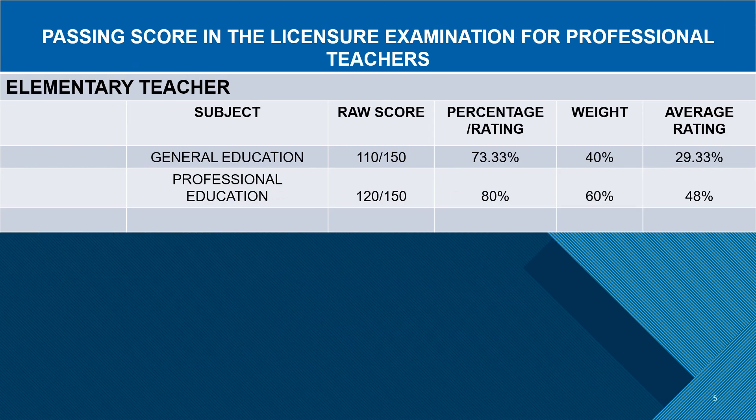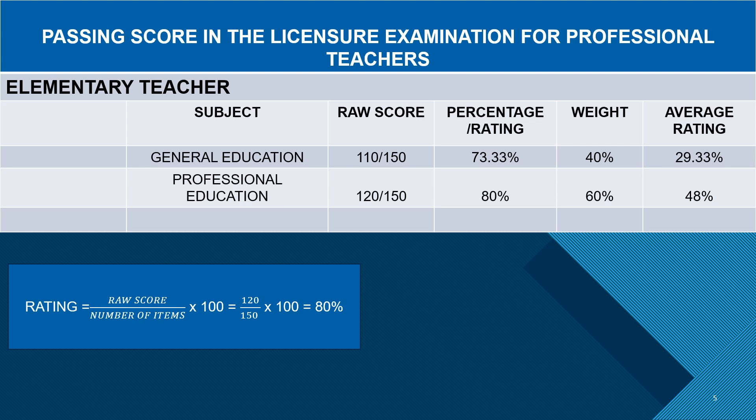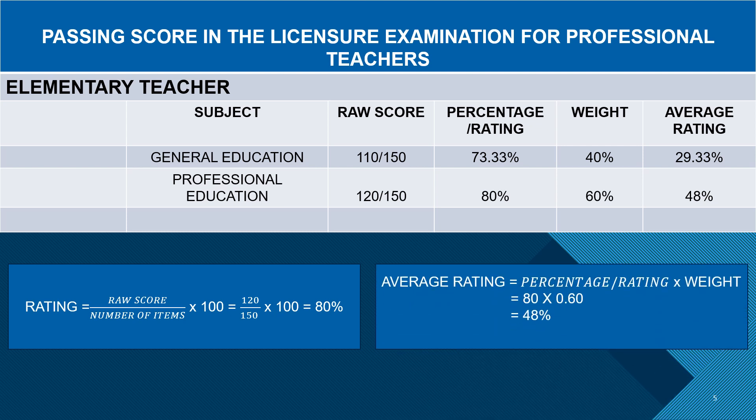To calculate the percentage or rating in the professional education subject, the same process is applied. Let us say that the examinee obtains a score of 120. Raw score divided by number of items gives 80%. Applying the same process to get the average rating — rating times weight — we have 80 times 0.60, giving 48%.